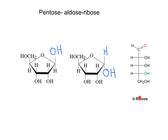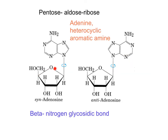Now we are going to explore the pentose ribose, which is important because it is found in the molecule of RNA. This pentose also forms the stable hemiacetal; it has five carbons — the anomeric carbon 1, 2, 3, 4, and 5. The beta-anomer of ribose will react with nitrogen bases to form beta-nitrogen glycosidic bonds. These are the ones found in DNA and also in RNA.